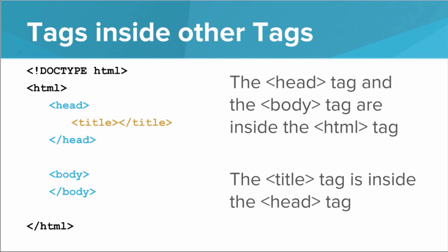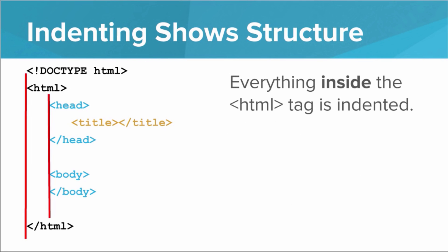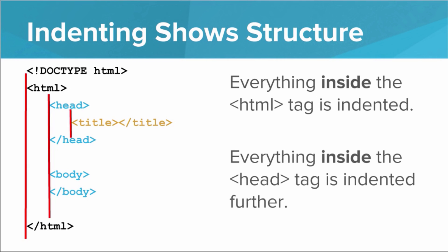So first off, we see from this basic HTML template that tags can go inside other tags. We see that the head tag and the body tag are both inside the HTML tag. Also, we see that the title tag is inside the head tag. Now every time we have a tag inside of another tag, we indent those tags over. So everything inside the HTML tag is indented, and everything inside the head tag is indented one further. This helps us see the structure of the web page and which tags are inside which other tags.